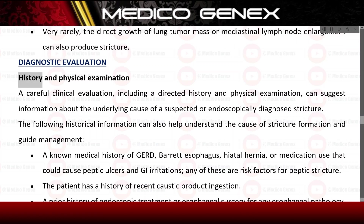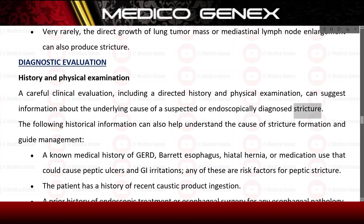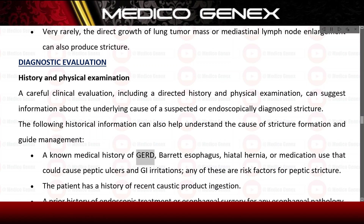A careful clinical evaluation including a directed history and physical examination can suggest information about the underlying cause of a suspected or endoscopically diagnosed stricture. Relevant history includes a known medical history of GERD, Barrett's esophagus, hiatal hernia, or medication use that could cause peptic ulcers and GI irritation — all risk factors for peptic stricture — as well as any recent history of caustic product ingestion.